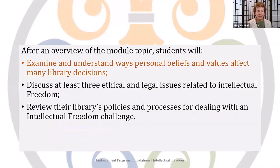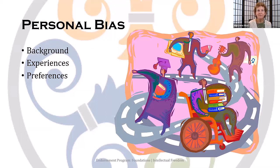Let's dive into examining and understanding ways personal beliefs and values may affect library decisions. There may be many things that sway our biases: our background, our education, our experiences, and even our preferences — for instance, I prefer nonfiction over fiction. The word bias means disproportionate weight in favor of or against an idea or thing. While the word can have a very negative meaning, it's also a very common thing we all have — basically like our favorites. So when it comes to favorites, we're all biased in one way or another.